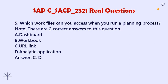Question 5: Which work files can you access when you run a planning process? Note: There are two correct answers. A. Dashboard. B. Workbook. C. URL link. D. Analytic application. Answer: C, D.